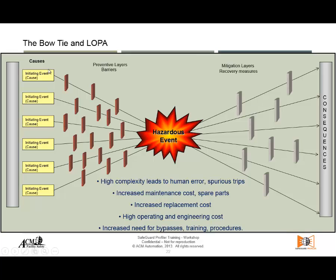You have the initiating causes on one side — the initiating cause is what initiates a certain mechanism. If that mechanism is not stopped and it goes all the way down, it will end up in a hazardous event, an unwanted event. That would be expressed in a bow tie, and we will see how Safeguard Profiler offers a graphical representation of our hazard, clearly showing the weakest points and where safeguards could be applied.